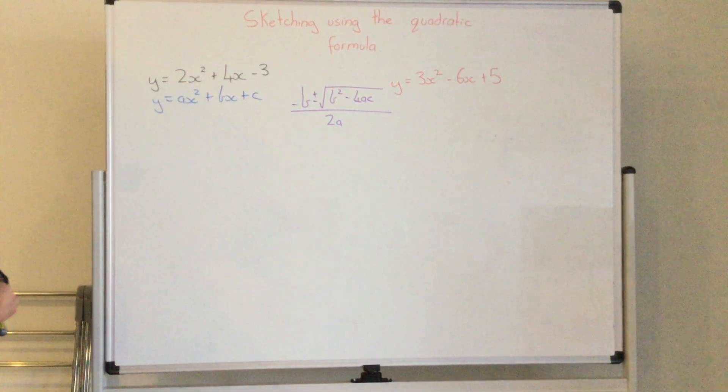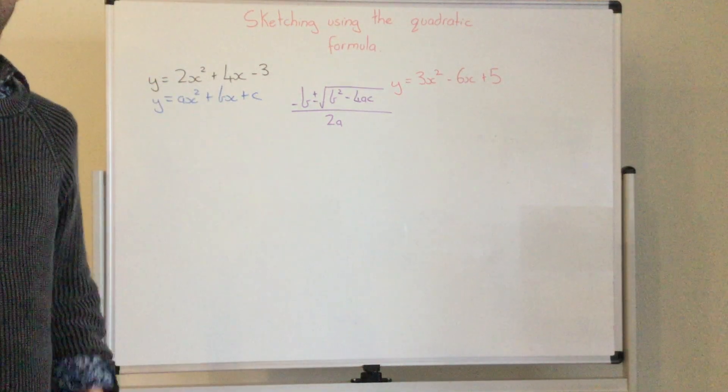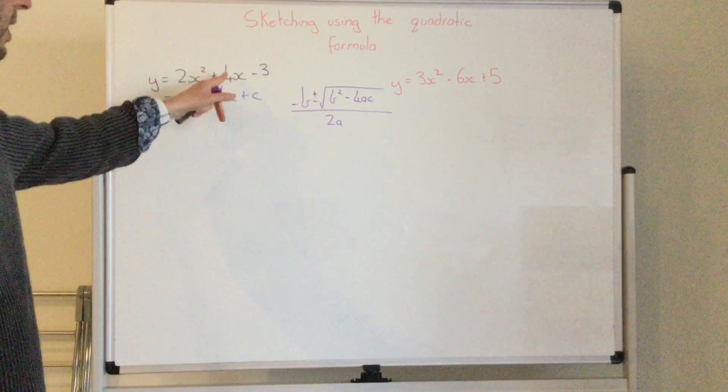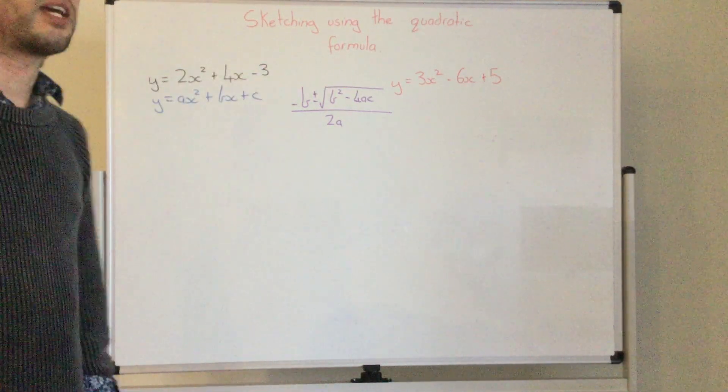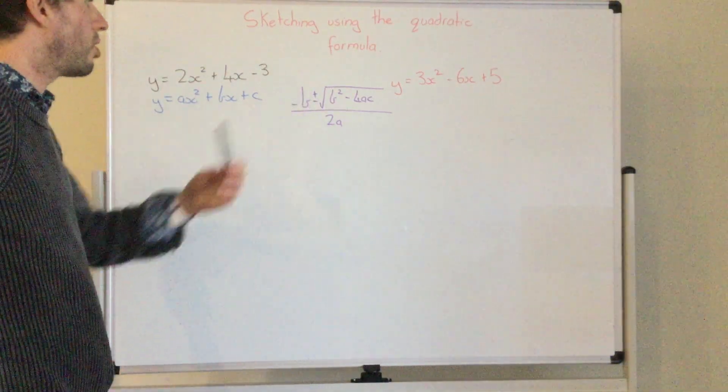So I know straight away that based on a we've got a is 2, b is 4 and c is negative 3. So I'm just going to input those into this equation.